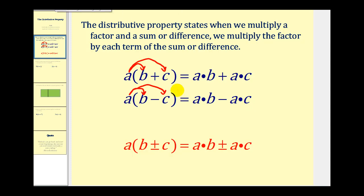Sometimes you'll see the distributive property written using a combined form, which is just a way to combine these two rules into one. Notice we have a plus or minus sign — if we use the plus sign on the left, we use the plus sign on the right, and if we have a minus sign on the left, we use a minus sign on the right.